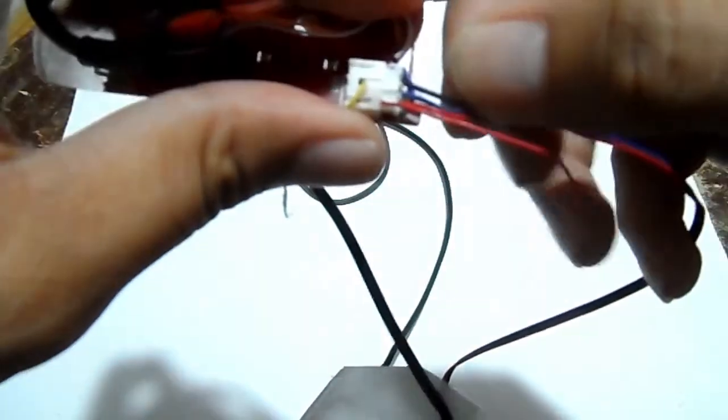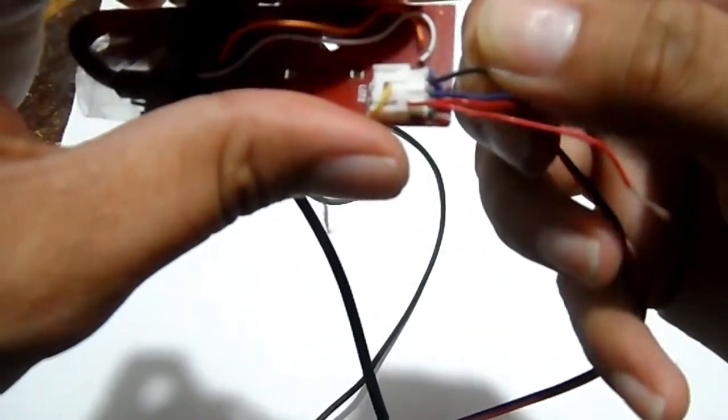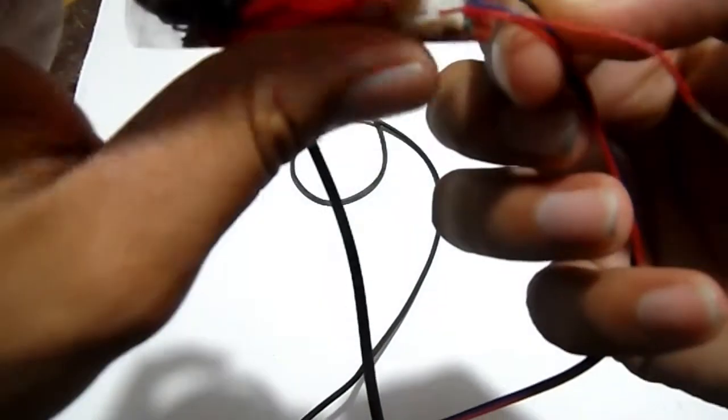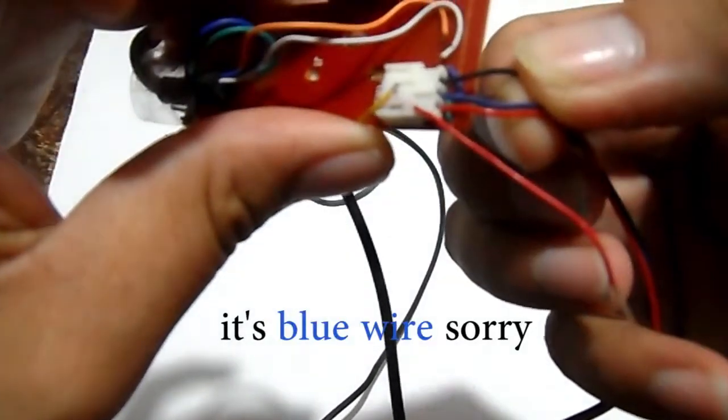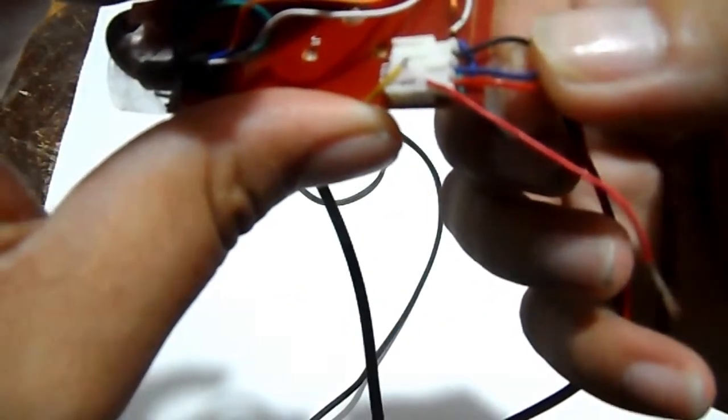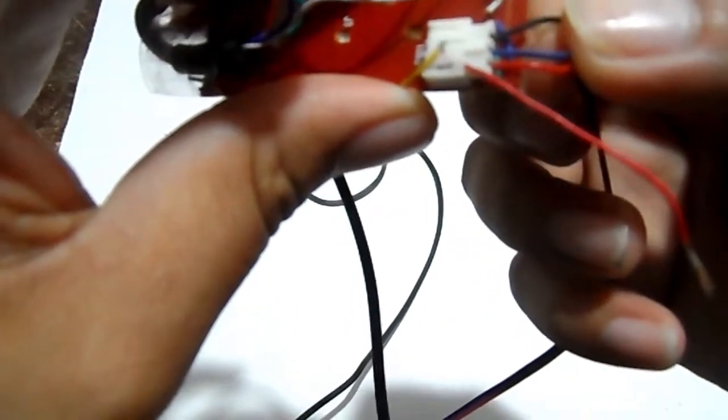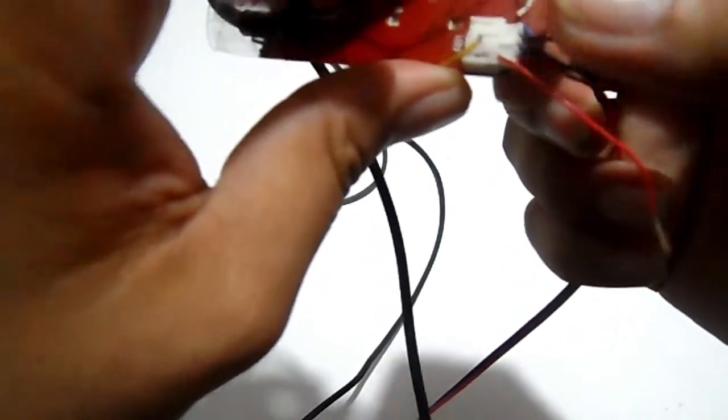The black one is the negative terminal or the ground, and the red and black wire here is the positive terminal, or positive rather.